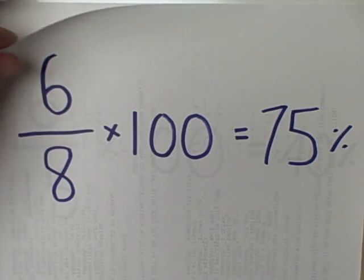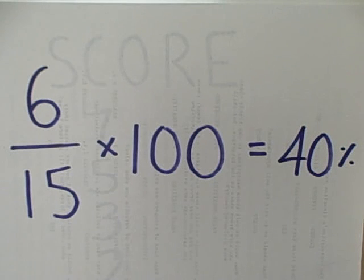So our new denominator is going to be 15. So, 6 divided by 15 times 100 is 40%. 40% of the people who passed the test were in the experimental group.